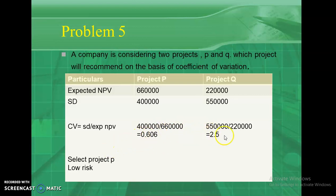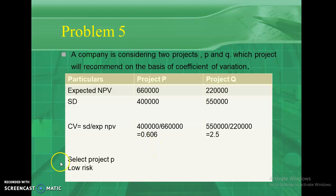Coefficient of variation for Project P: 4,00,000 divided by 6,60,000 equals 0.606. For Project Q: 5,50,000 divided by 2,20,000 equals 2.5. Comparing both: Project Q has a higher coefficient of variation, meaning Project Q is riskier than Project P. Therefore, select Project P, as its risk is much lower compared to Project Q.